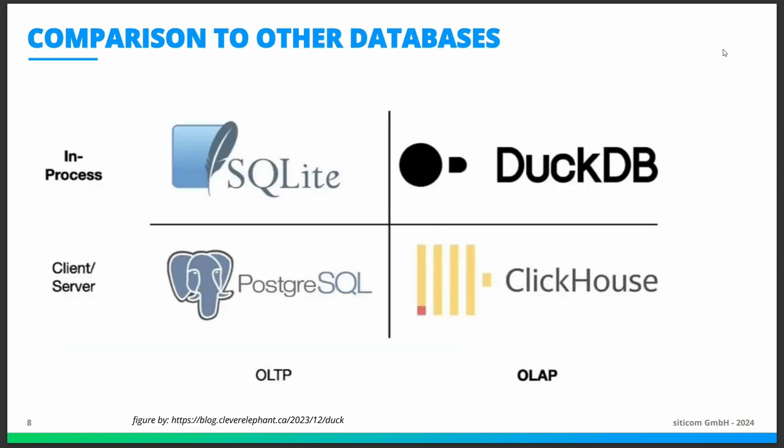Now a little comparison to other databases — this is a very high-level overview. There are OLTP databases built for transactions, like PostgreSQL, where many people can do transactions simultaneously with read and write. PostgreSQL is the popular client-server version. Then you have SQLite as a file-based in-process database. For analysis there's also a client-server-based database called ClickHouse. And now DuckDB fills a previously empty field — it's an in-process database for analysis.